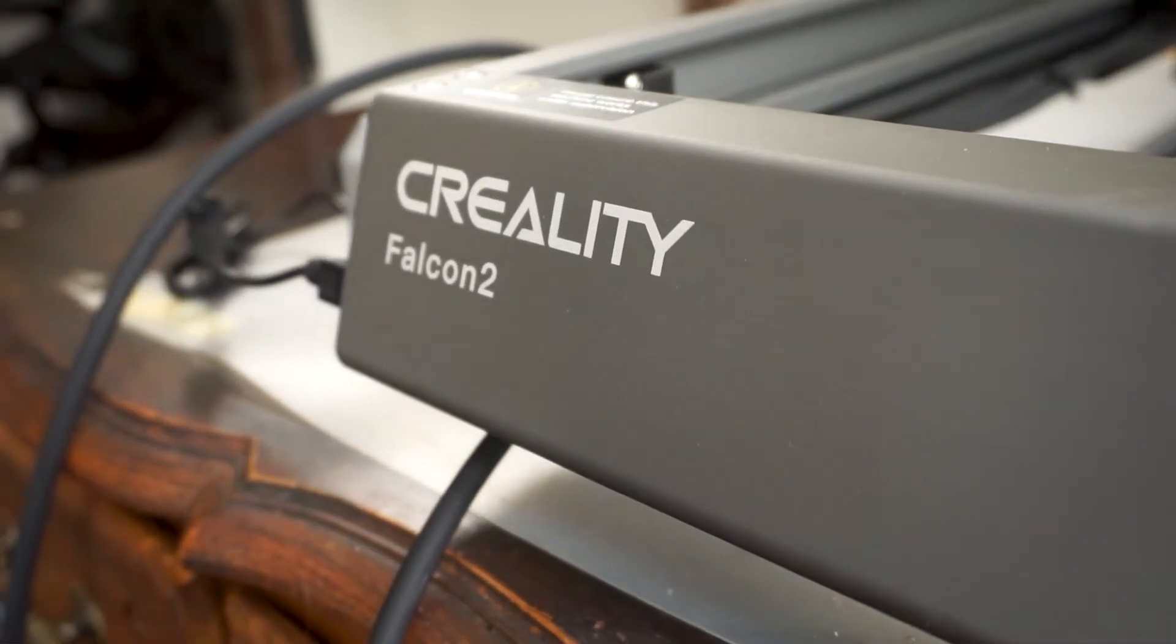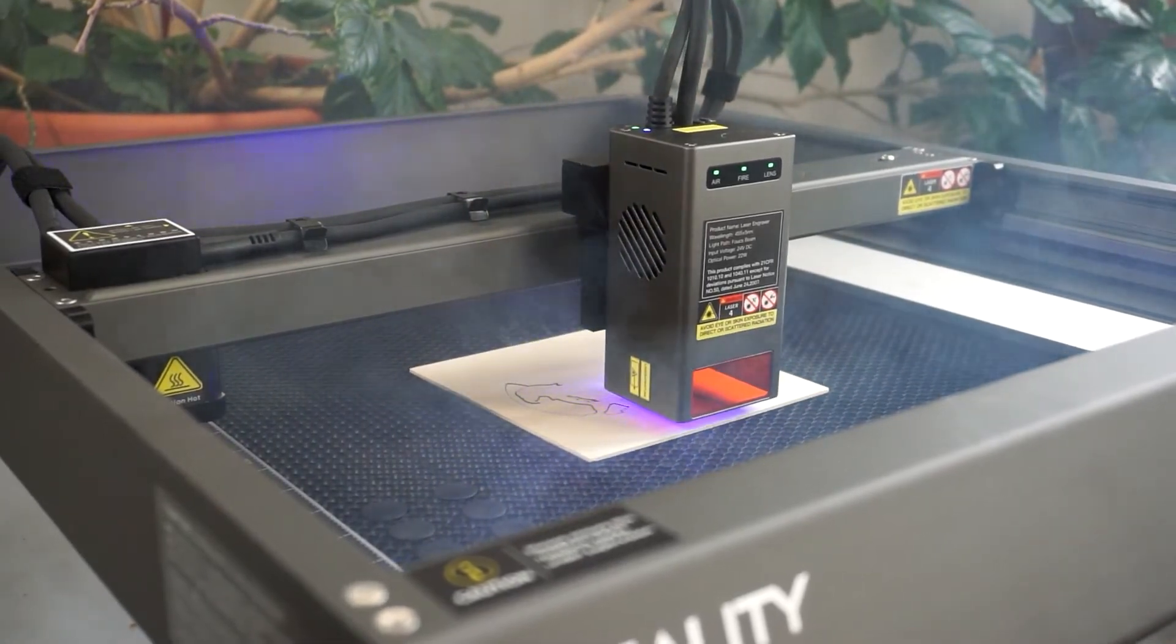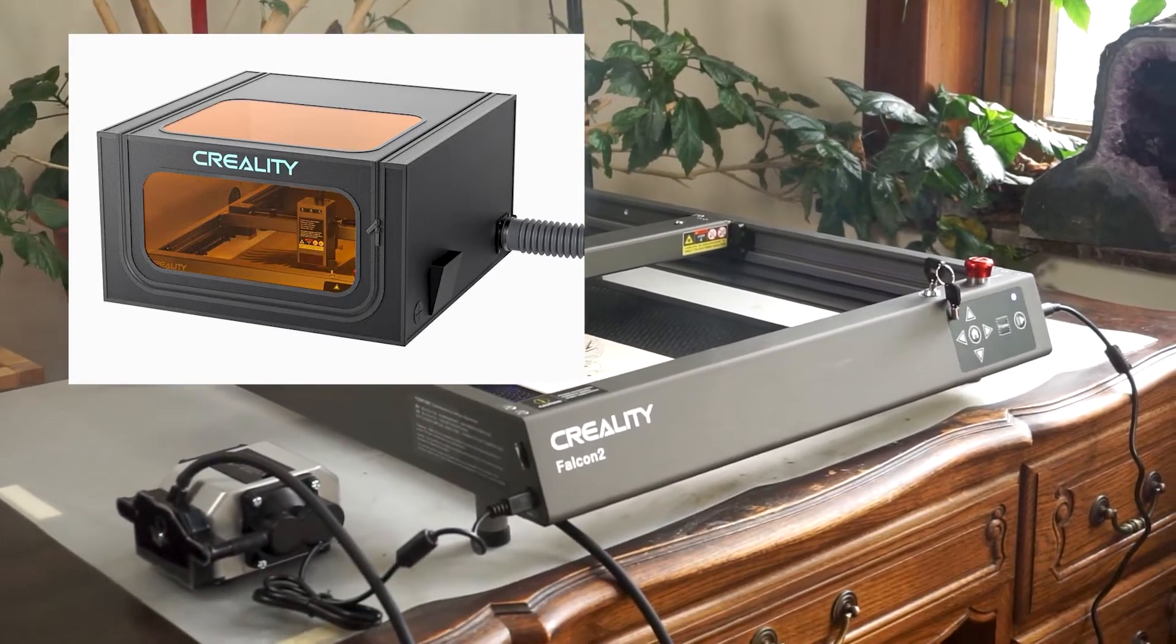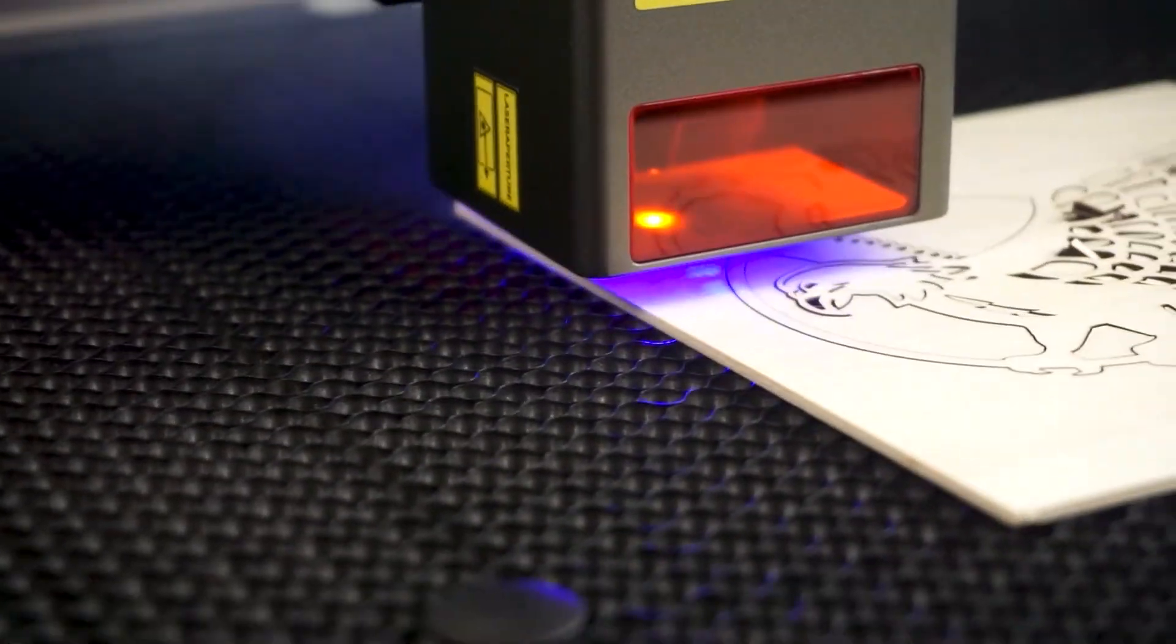And the last negative of this machine is the smoke that it produces during the cut. Creality sells an enclosure that can be placed over the laser, but also doing the cuts outside works as a workaround.